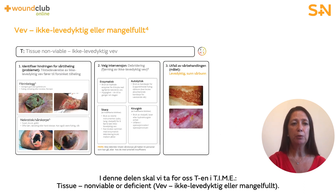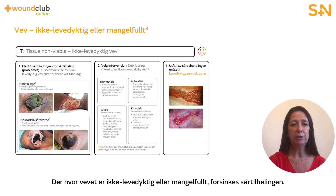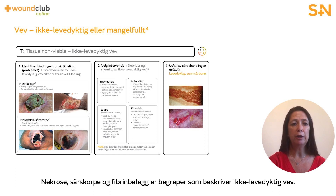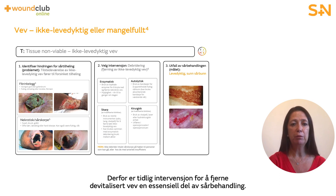For this section, we will refer to the T in TIME: tissue, non-viable or deficient. The goal is to assess for and identify the type of non-viable tissue and establish a plan and goals for management. Where tissue is non-viable or deficient, wound healing is delayed. Necrosis, eschar and slough are terms that describe non-viable tissue. For epidermal cells to migrate across a wound surface, a well-built extracellular matrix is required. Therefore, early interventions to remove devitalized tissue are an essential part of wound management.